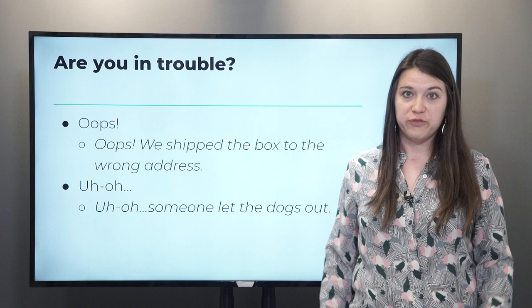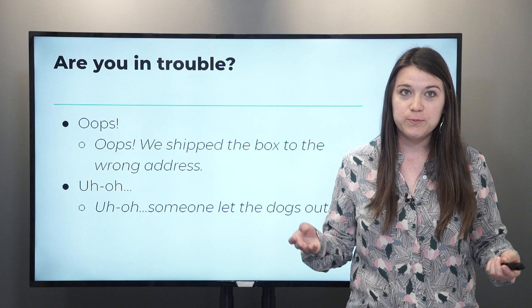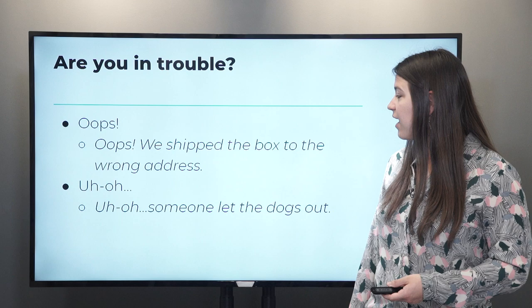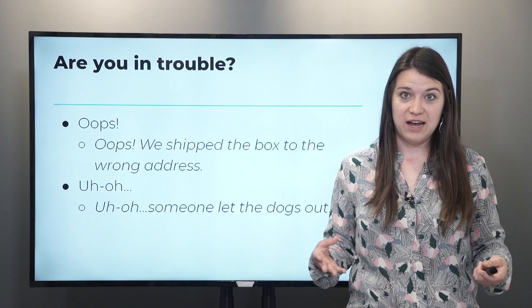If you were in trouble or if you've done something wrong, another interjection you can say is 'oops.' For example, 'Oops, we shipped the box to the wrong address.' Another interjection for when you've done something wrong or you're in trouble is 'uh-oh.' For example, 'Uh-oh, someone let the dogs out.' This means I made a mistake, I shouldn't have done that — so you say uh-oh.